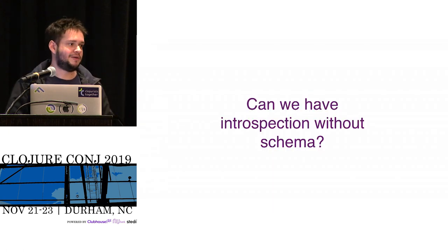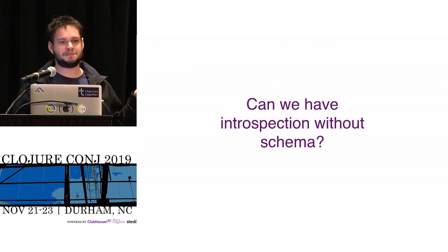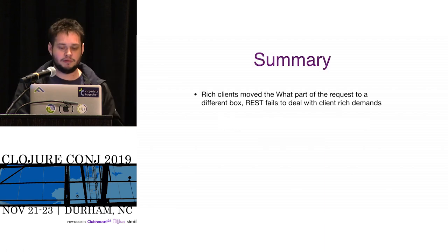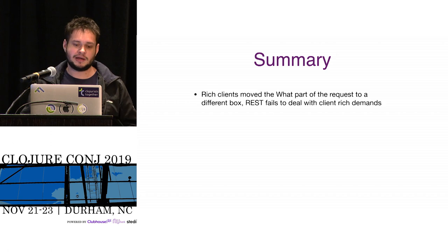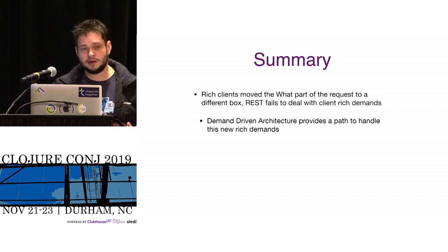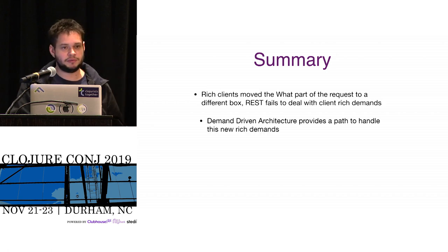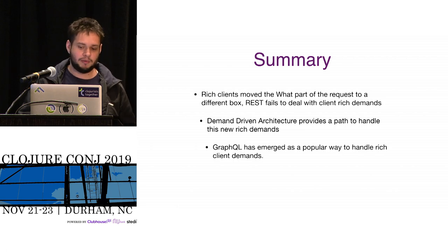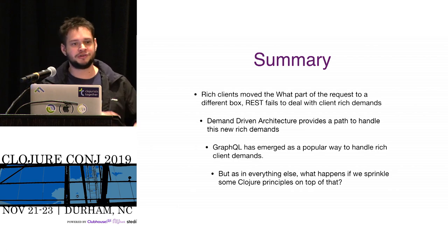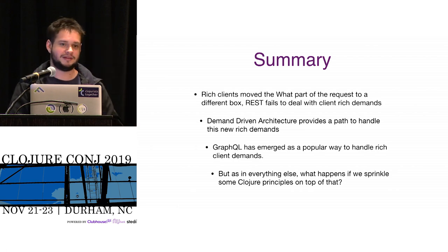Then comes the question: if we go in that direction, can you have introspection and the cool features that GraphQL does? Maybe — let's see. Quick summary of what we just saw: REST clients move the "what" part of our request to a different box, and REST fails to deal with rich demands. Demand-driven architecture provides a path to handle these new rich demands. GraphQL has emerged as a popular way to handle them. But what happens if we try to sprinkle some Clojure ideas and properties on top of that?